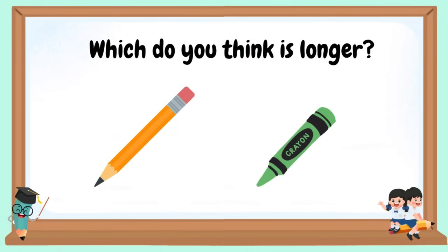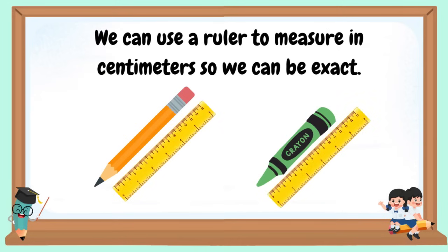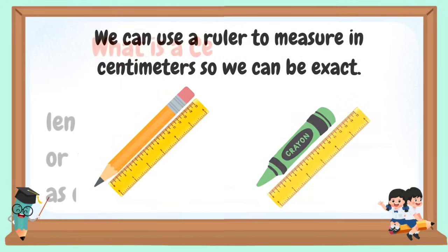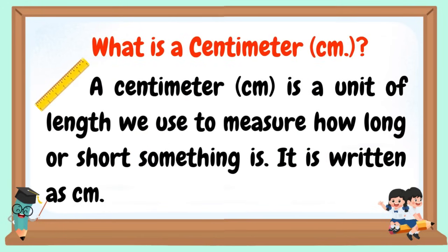Which do you think is longer? We can use a ruler to measure in centimeters so we can be exact. What is a centimeter? A centimeter is a unit of length we use to measure how long or short something is. It is written as cm.